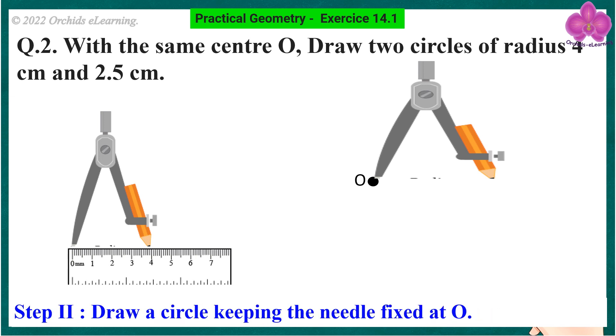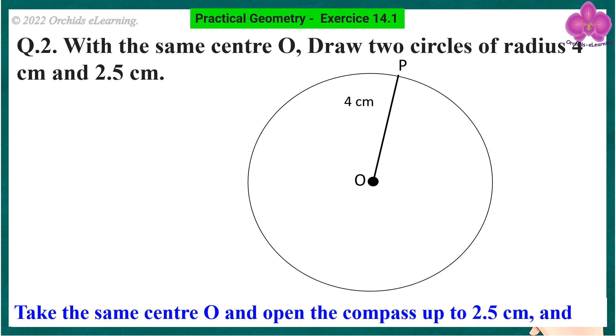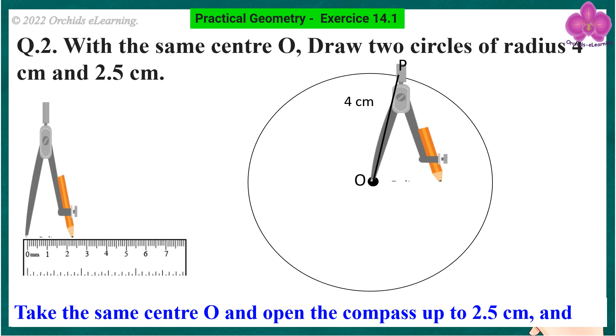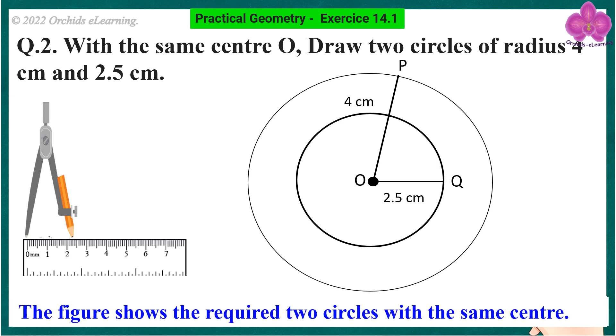Step 2: Draw a circle keeping the needle fixed at O. Take the same center O and open the compass up to 2.5 cm and draw another circle. The figure shows the required two circles with the same center.